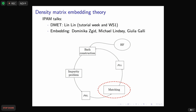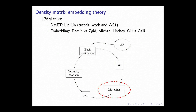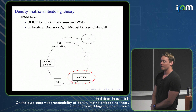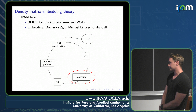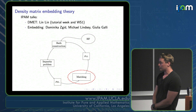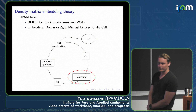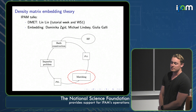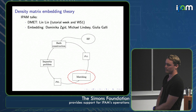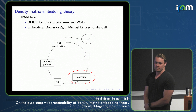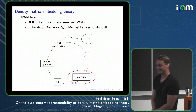DMET — we've heard a number of wonderful talks on embedding theory in general, and we've also heard two very nice talks by Lin on DMET specifically, one in the tutorial week and one in the workshop. In my talk, I will only focus on the matching part. But just to make sure we're all on the same page, I want to give a very rough bird's eye perspective on how DMET works. The highest level idea of DMET is that you consider not the full system, but partition your full system into small fragment systems. Each of these fragment systems interacts with the environment and is interpreted as an open quantum system. For each fragment, you define bath orbitals, and these bath orbitals model the interaction of the fragment orbitals with the environment.